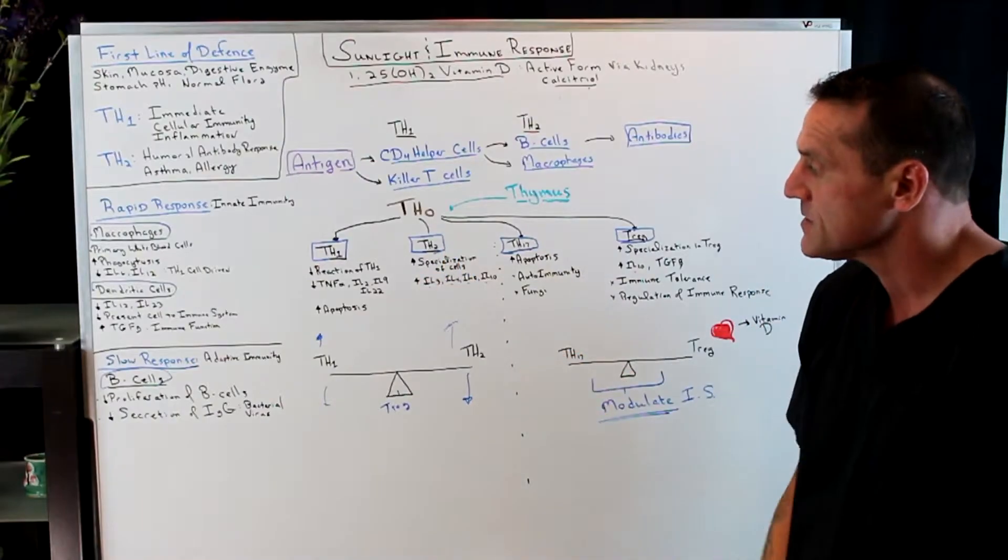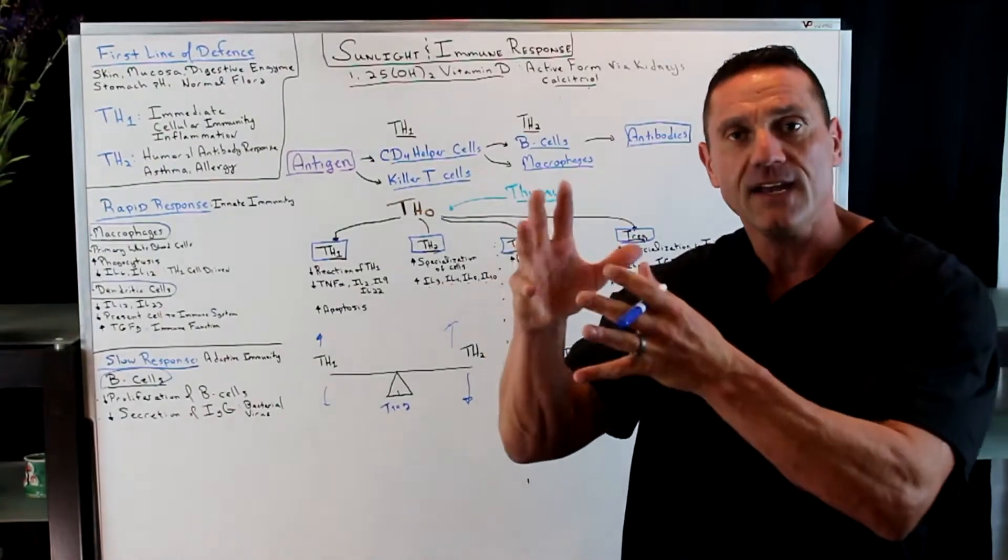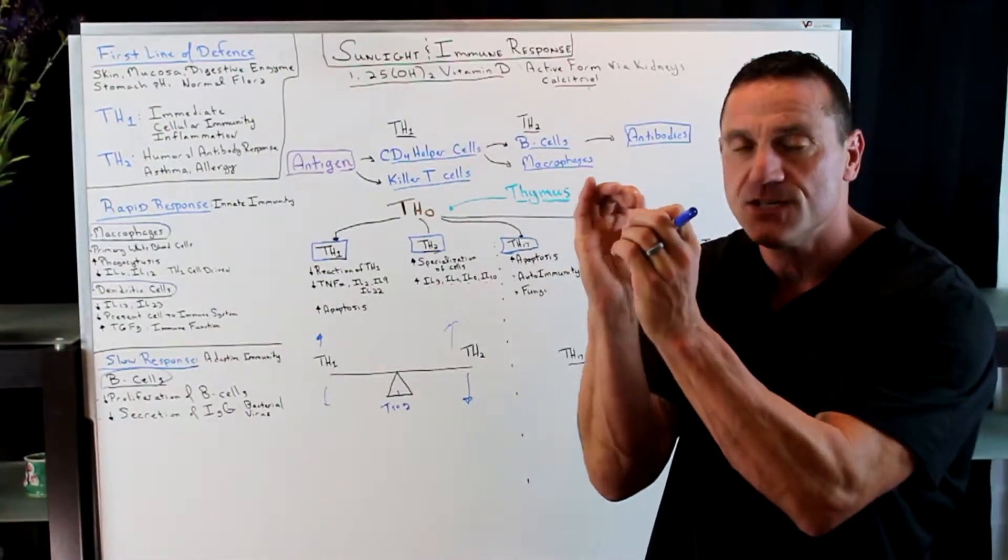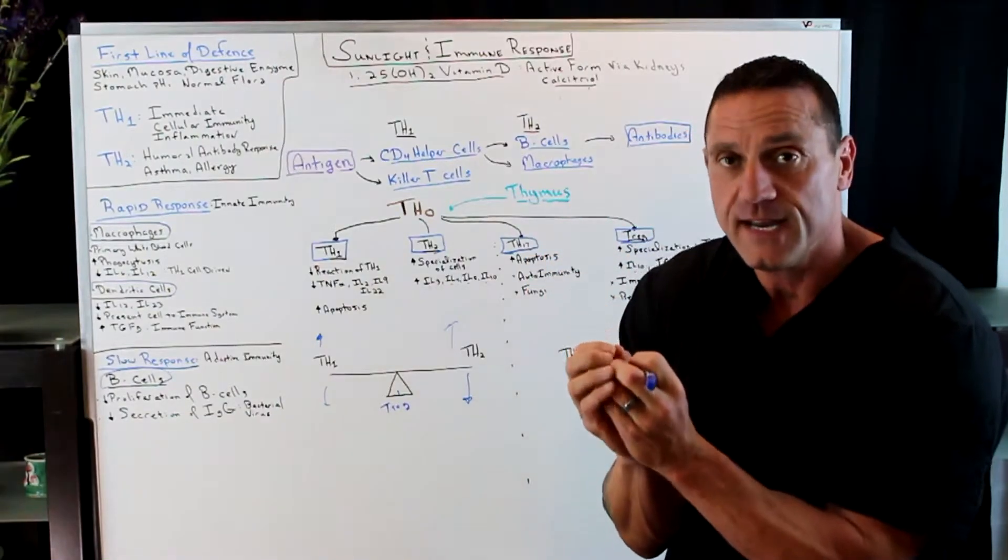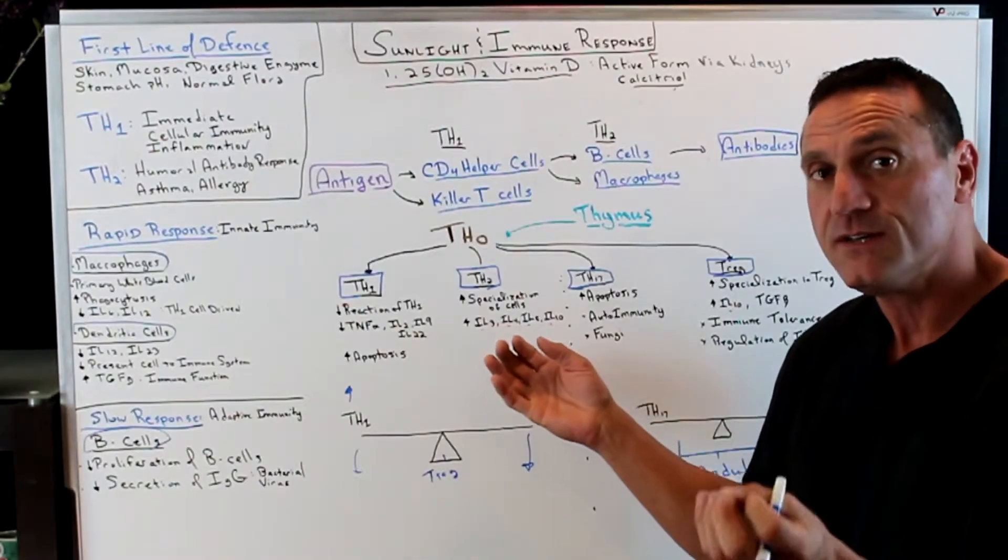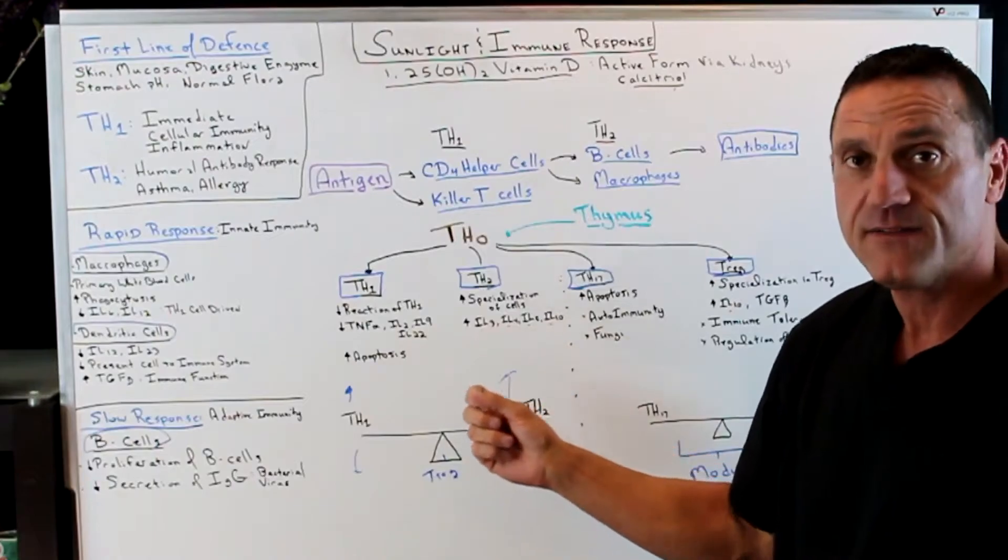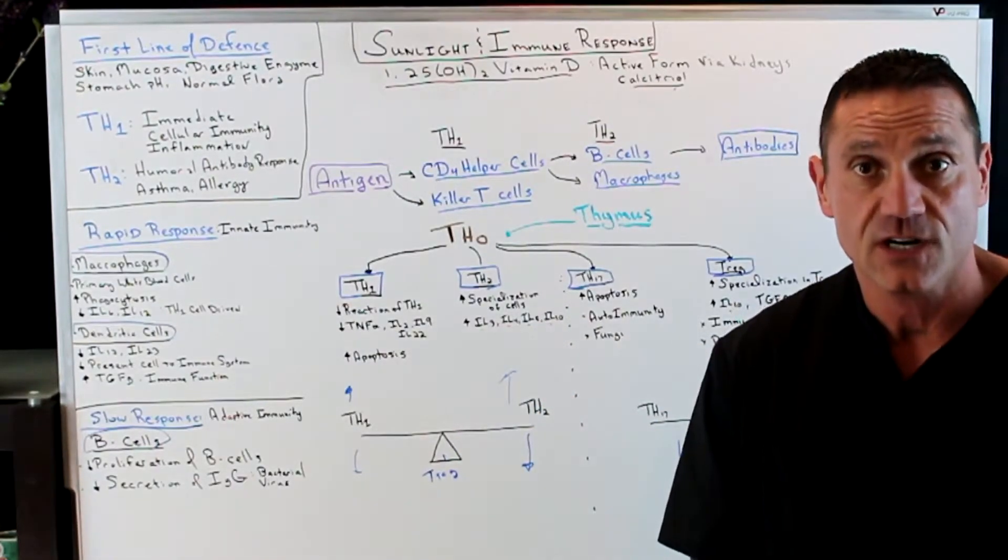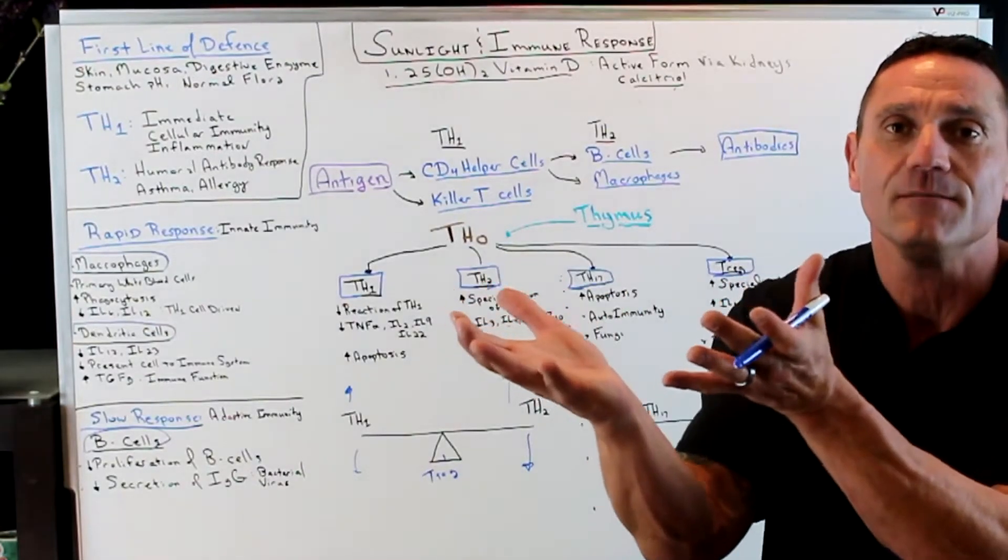In addition, sunlight helps the Th2 response, the specialization of cells. You want the antibodies to really specialize to understand which one is friend and which one is foe. Because what's going to happen, like an autoimmune response, your body doesn't know if it's friend or foe. And that's more of a Th2 response. So again, it's going to help specialize which one is good and which one is bad. And also, we have the other interleukins, which are anti-inflammatory. It's going to help stimulate those. Sunlight makes you feel better.